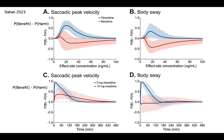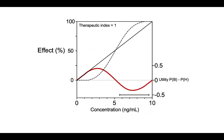We looked at velocity — tracing of the eye following a dot on the screen — and we looked at body sway as a marker of ability to mobilize, or becoming dizzy when you get up. Because the biggest problem of opioids is not respiratory depression, by the way. The biggest problem is that people get up, get dizzy, fall on the floor, and break their hips. Then another issue is respiratory depression.